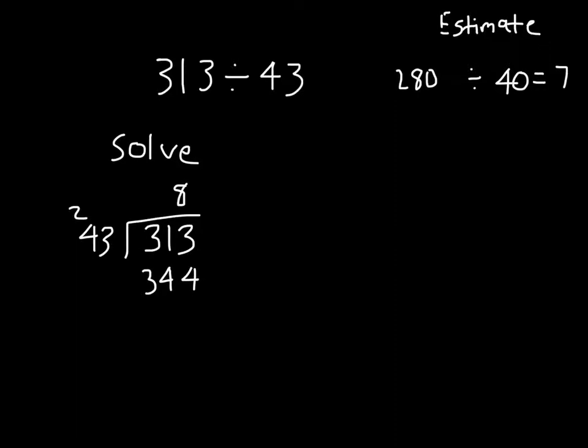So what we would have to do is go from 8 to 7. And so instead of 344, we'd have 7 times 3 is 21. 1, regroup the 2. 4 times 7 is 28, plus 2 is 30. 3, so 313 minus 301 is equal to 12. So it would be 7 with a remainder of 12.